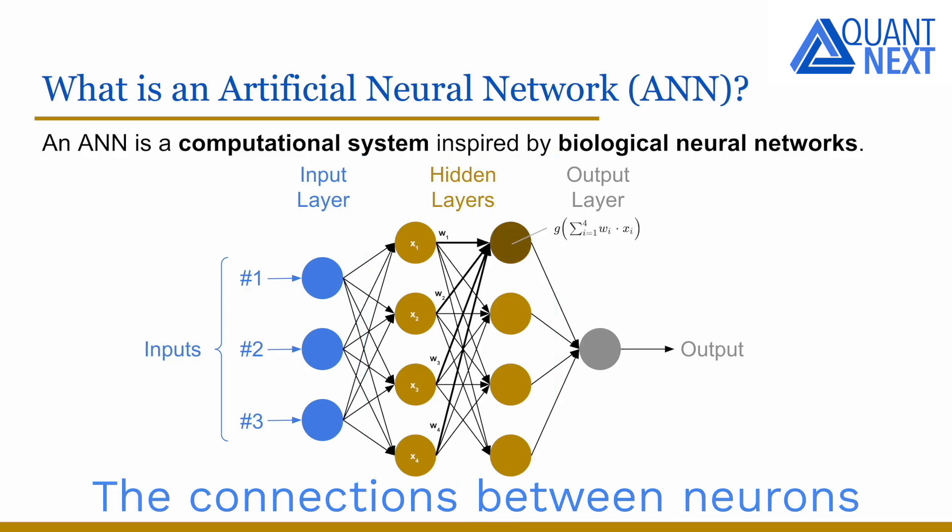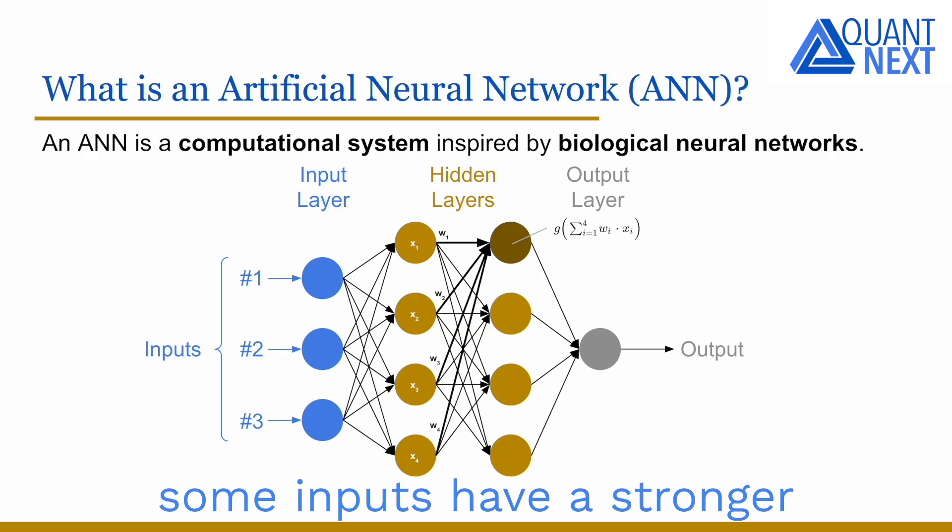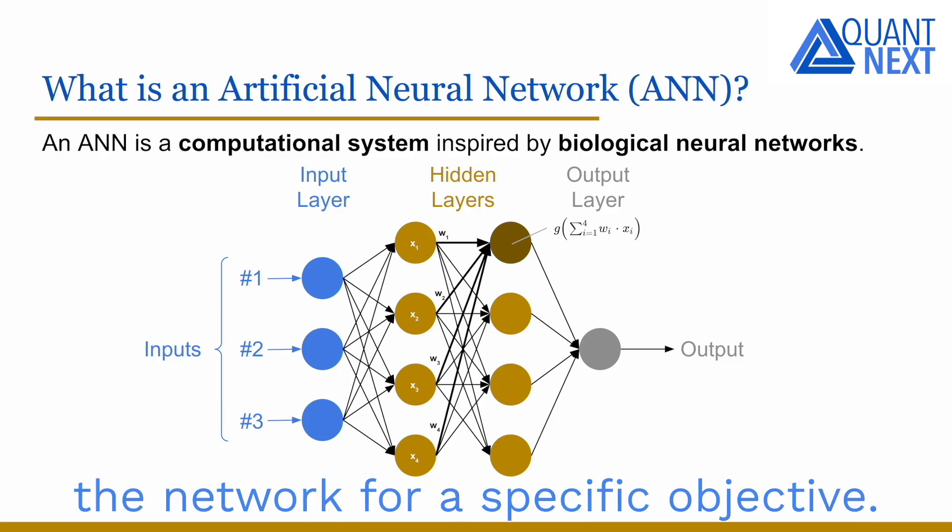The connections between neurons are weighted, which means that some inputs have a stronger influence on the output of the neurons than others. These weights are adjusted during the training to improve the performance of the network for a specific objective.